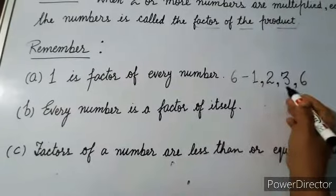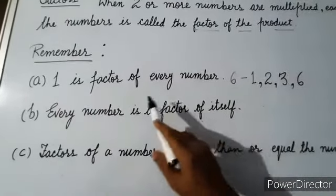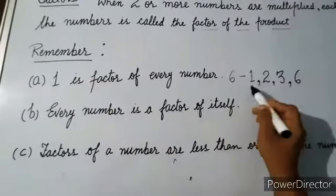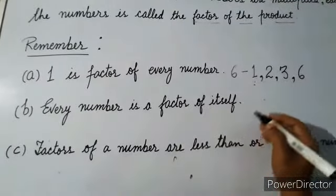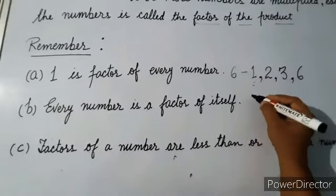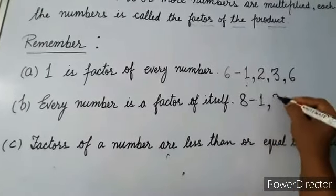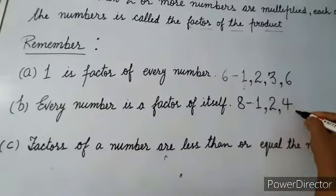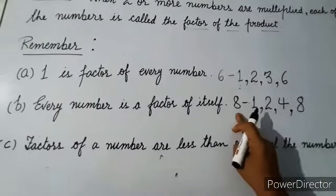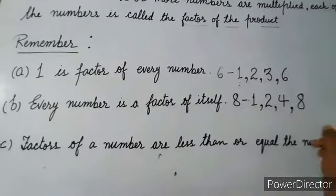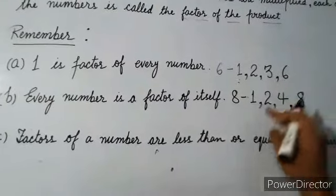So the factors of six are one, two, three, and six. One is the factor of every number, and every number is a factor of itself. Now taking another example: the factors of eight — one, because eight comes in the table of one; two, because eight comes in two's table; four; and eight itself.